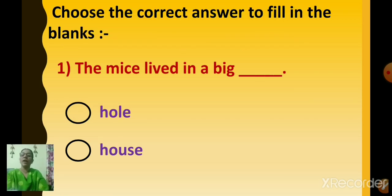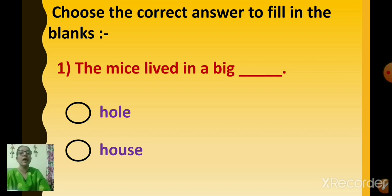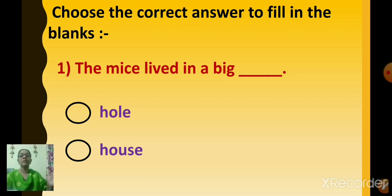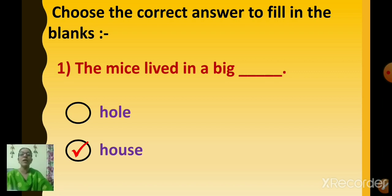Here again the head question is changed: Choose the correct answer to fill in the blanks. You have to click on the correct answer. The mice lived in a big dash — where did the mice live, in a hole or a house? Yes, the mice lived in a big house. Click on house.